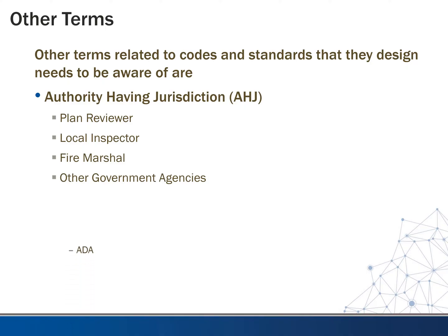Another AHJ is the fire marshal. They can usually come in and trump everybody — if they don't like the way the fire alarm system is installed, or if there's a smoke evacuation system or some life safety issue, they can trump everybody. You can also have other government agencies, such as the ADA, FCC, or FAA if you're near an airport. There are also healthcare regulatory agencies — each state has their own separate regulatory agency and their own standards. So you have to do a little homework as you start a design in a new area or a new project type.